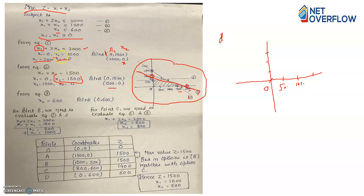For equation number 3, x2 ≤ 600 — only one variable x2 is present. Since x1 = 0, the point is (0, 600). Mark 600 slightly above 500 on the y-axis. You get a horizontal line at x2 = 600, which is equation number 3.